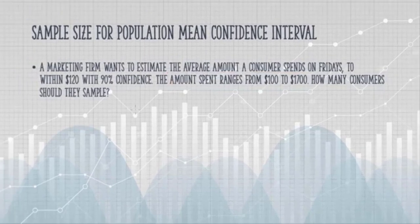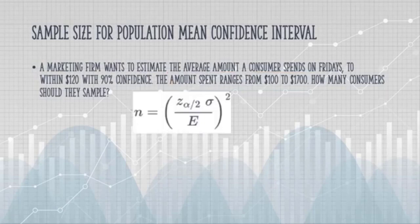The last formula we're going over is the sample size for the population mean. Here's our formula. N is the number of people in the sample, that's what we're trying to find. Z of alpha divided by 2 is the z-score associated with a particular confidence level. We're working with a 90% confidence level, so our z-score alpha divided by 2 is 1.645.